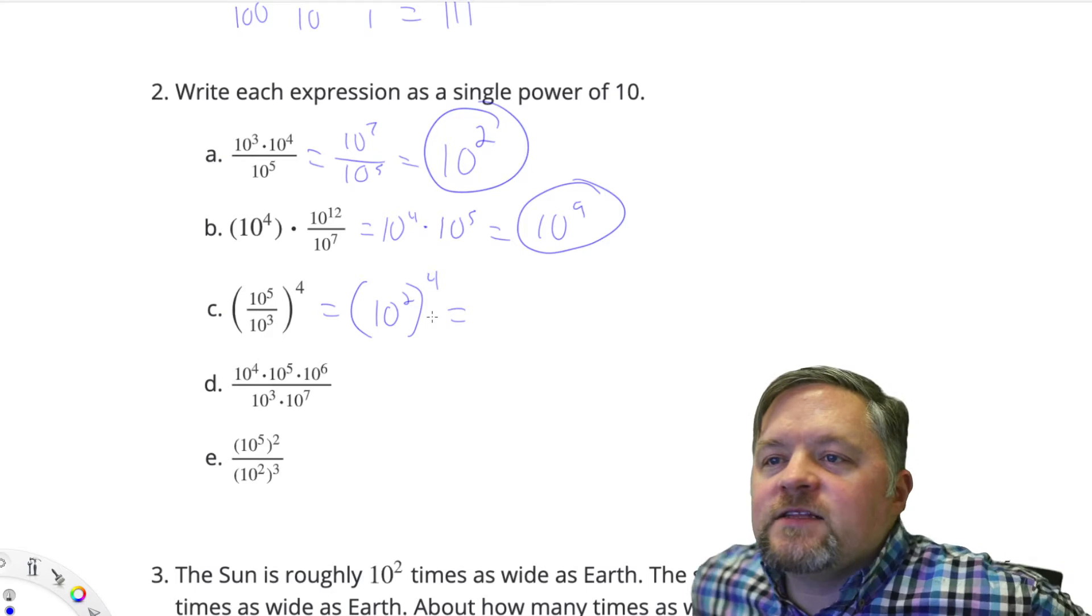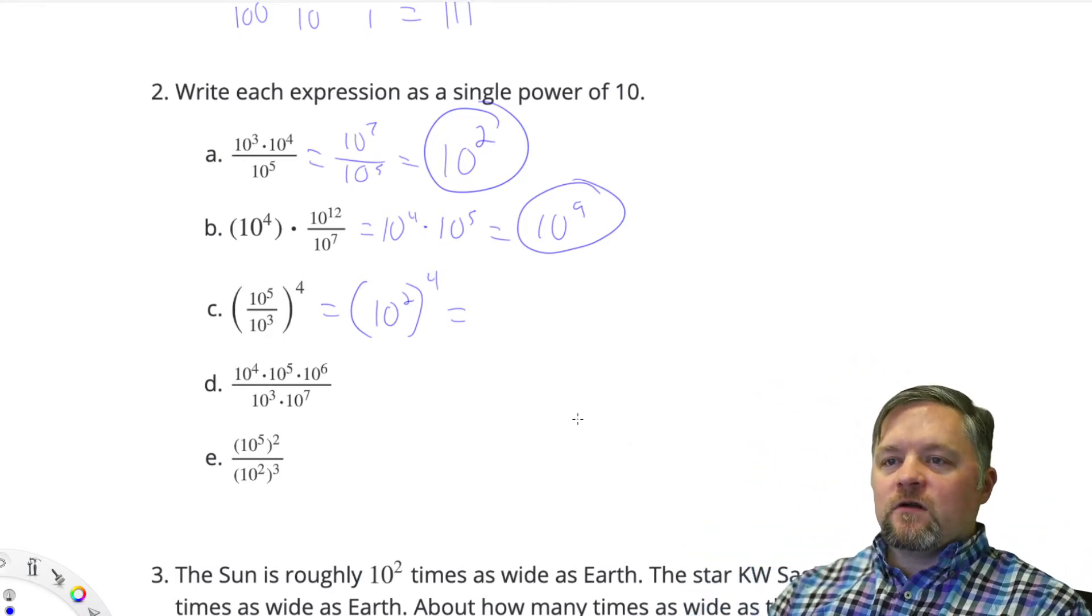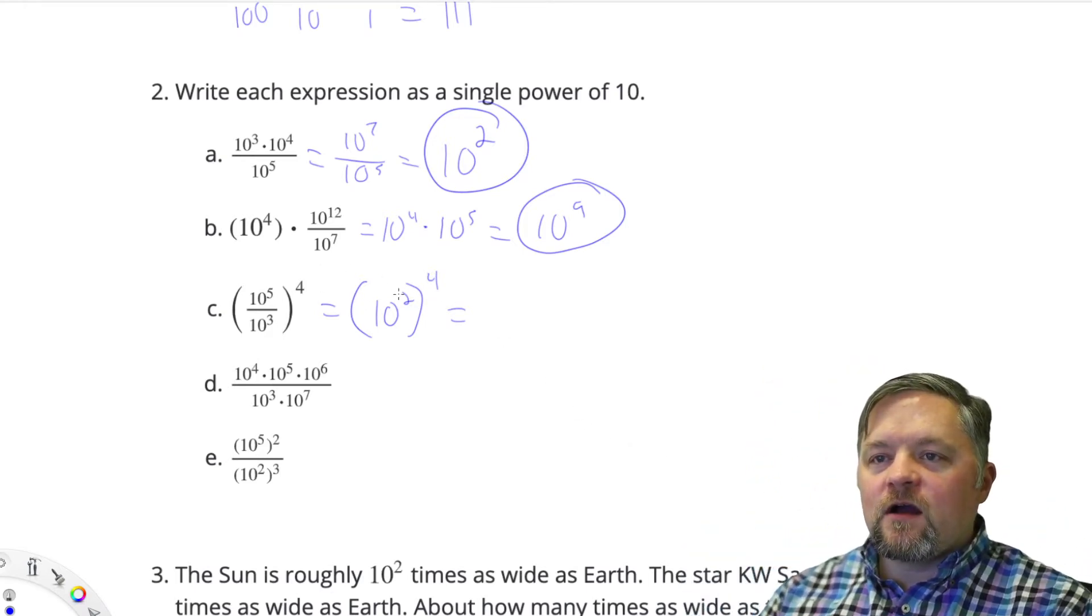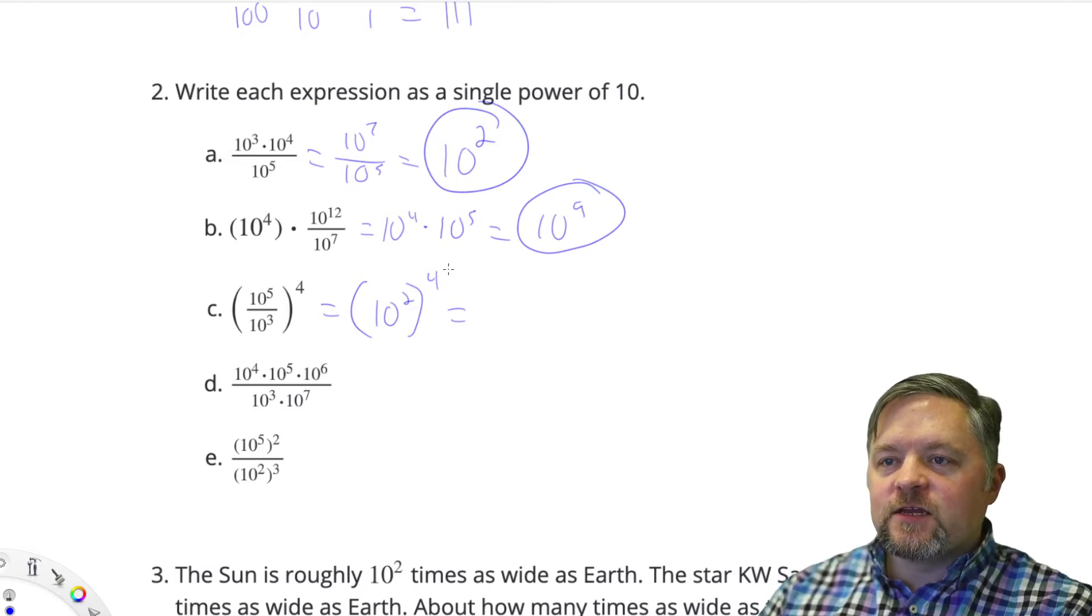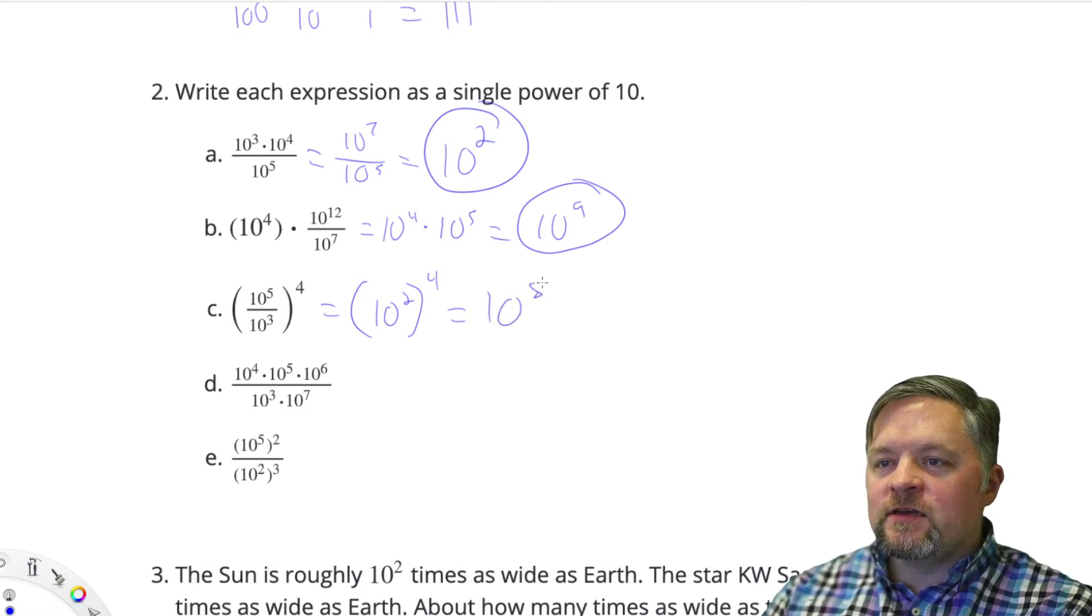Now we have 10 squared to the power of 4. Our rule when we are exponentiating - when we have something to a power, we multiply the exponents. 2 times 4 is 8.